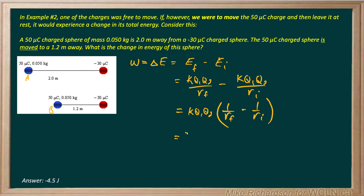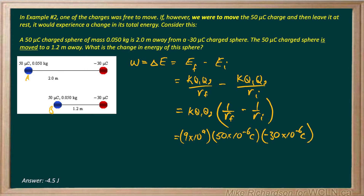So when I do that, I get 9 times 10 to the 9 — Coulomb's constant. Q1 was 50 microcoulombs, so 50 times 10 to the negative 6 coulombs. Q2 was 30, but negative. Remember, with energy you have to put in the signs of the charges exactly as you see them — so negative 30 times 10 to the negative 6 coulombs. Then I simply go 1 over R final, which was 1.2 meters, minus 1 over R initial, which was 2 meters.